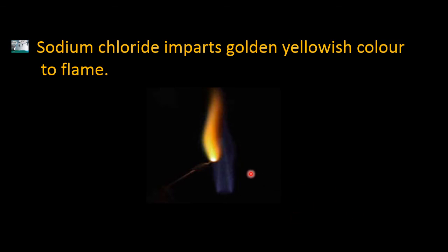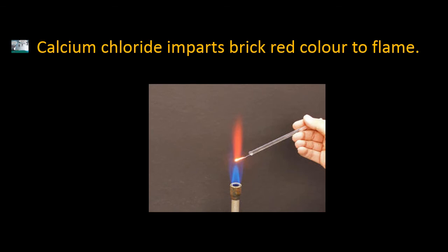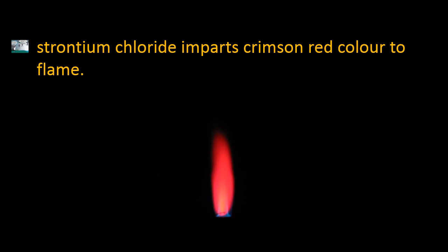Sodium chloride imparts a golden yellowish color to the flame. When we take sodium chloride on the metal wire and heat it in the oxidizing blue flame, we get a golden yellowish color, as shown in the picture. Calcium chloride imparts a bright red color to the flame. Strontium chloride imparts a crimson red color to the flame — when strontium chloride on the wire is placed in the blue oxidizing flame, we get crimson red.